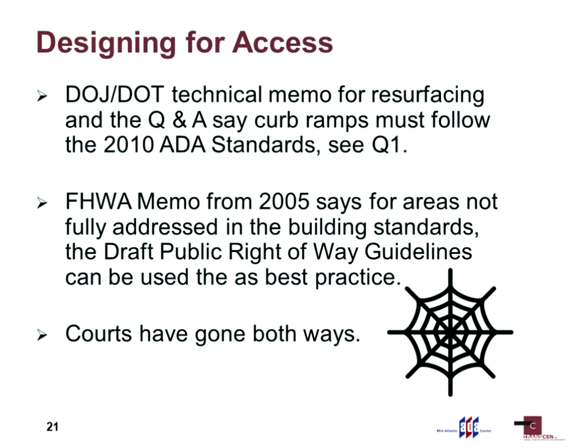Federal Highway has not updated that 2005 memo, and you may get some confusing messages in the near future. I've talked to the Access Board and Federal Highway — they're not going to be coming out saying the public right-of-way guidelines are best practice and feel free to use them. The reason is they will someday, hopefully soon, put those out for public comment, and it's hard to solicit comments for changes if you've already declared them best practices. So there is flexibility in design.